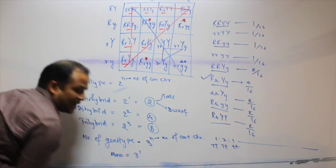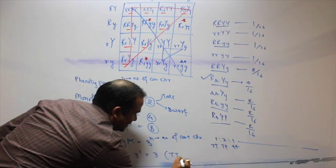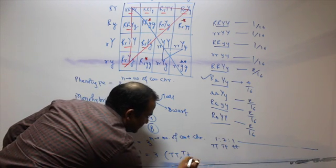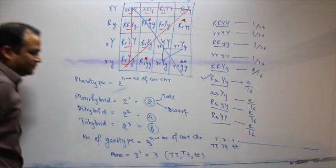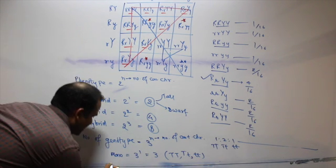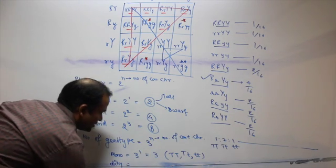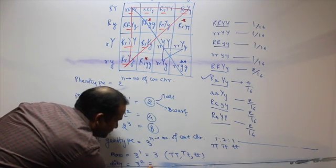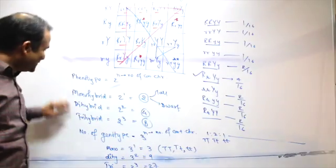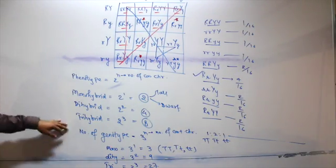3 to the power 1, that is total 3. Example: capital D, and small d, small d. And if what happens? Dihybrid cross — how many types? 3 to the power 2 — how many types? Total number of phenotypes, total number of genotypes.